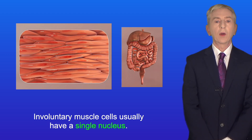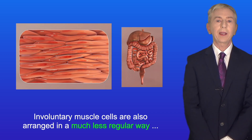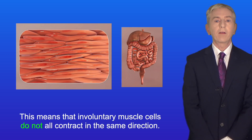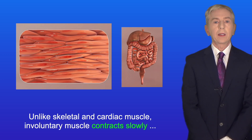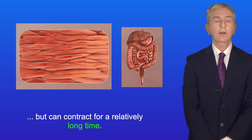Involuntary muscle cells usually have a single nucleus and are arranged in a much less regular way than skeletal or cardiac muscle cells. This means that involuntary muscle cells do not all contract in the same direction. Unlike skeletal and cardiac muscle, involuntary muscle contracts slowly but can contract for a relatively long time.